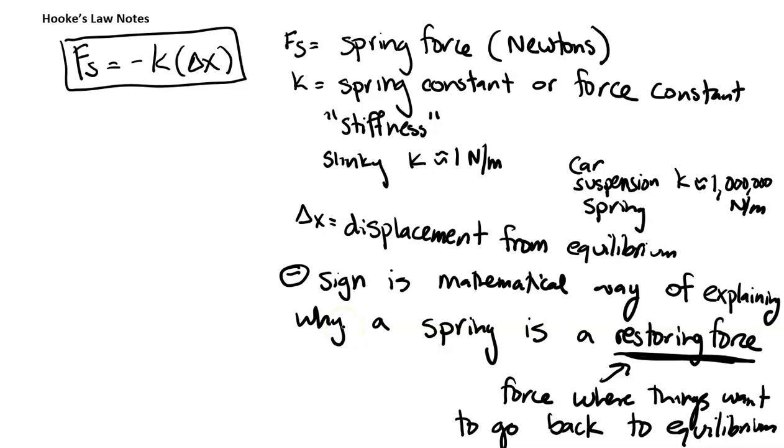And again, K is just like a constant for certain springs. So if it's a really stiff spring, it's going to be big, a really spring type thing that's easy to move. That is going to be like something like a slinky.